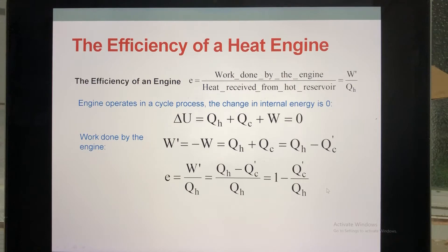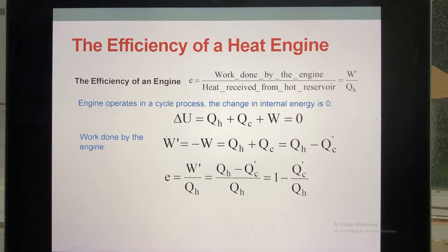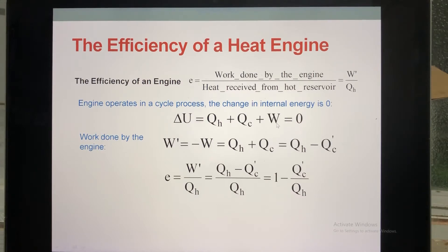So how do we calculate the efficiency? You get the work done by the engine — we denote W' — divided by the heat that the engine receives from the hot reservoir. How do you calculate the work done by the engine? You base it on the first law. The change of internal energy equals the heat plus the work done on the system. So you have heat Q_cold and heat Q_hot in the system of the heat engine, and you have the work.